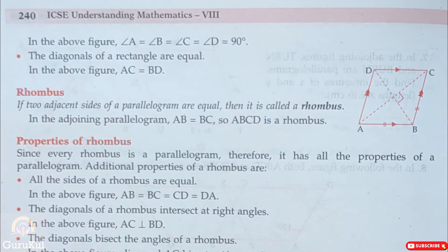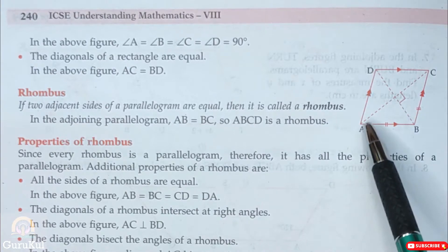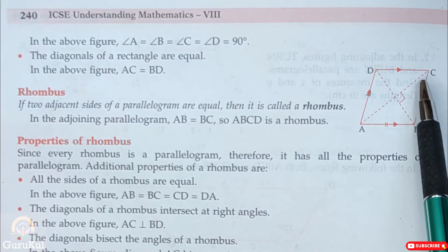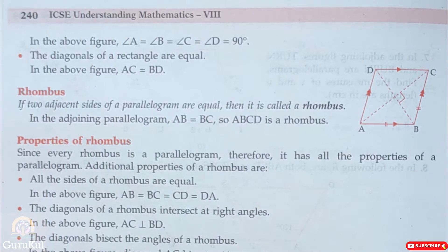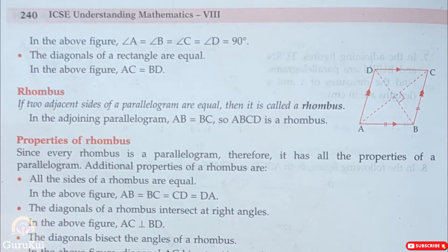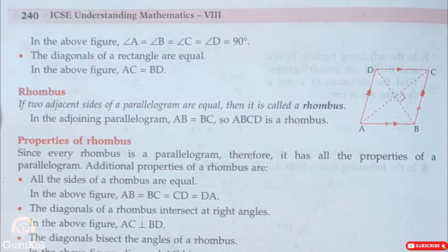Next, the diagonals bisect the angles of a rhombus. So the diagonals bisect the angles. And in the above figure, as you can see the diagonal AC bisects angle A as well as angle C. This is diagonal AC, which bisects angle A as well as angle C. Bisect means dividing into two equal halves. And similarly, diagonal BD bisects angle B as well as angle D. So try to keep these properties in your mind. So let me repeat, try to keep all these properties in your mind if you want to solve the exercises fluently.